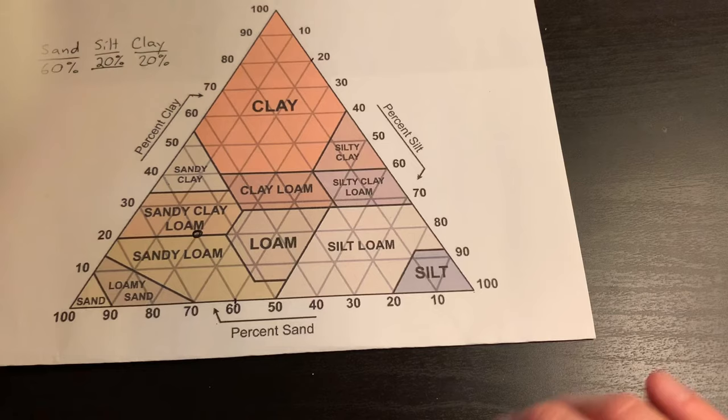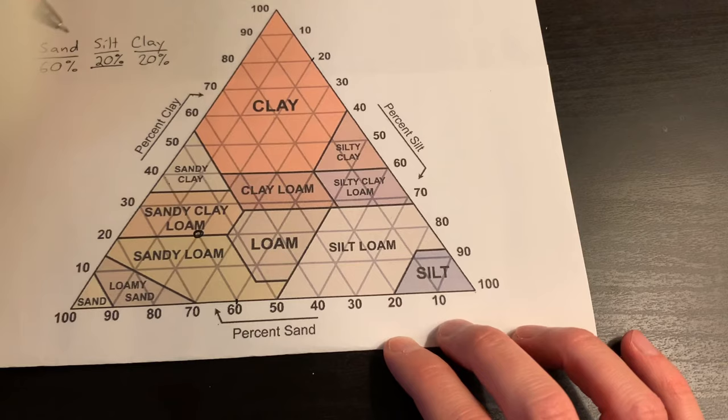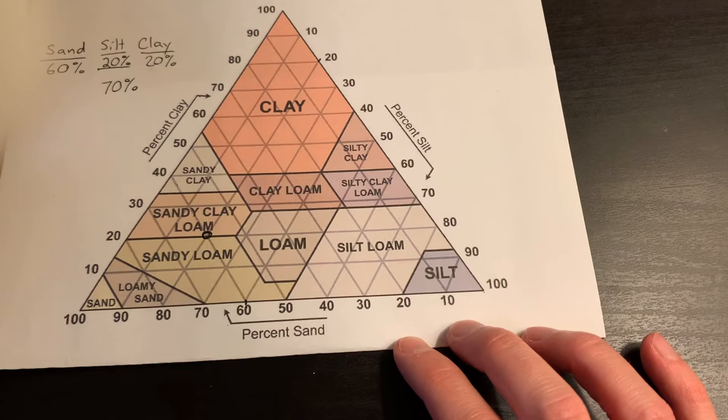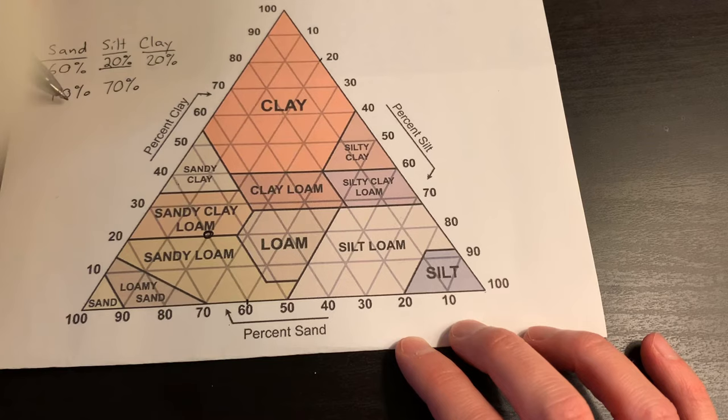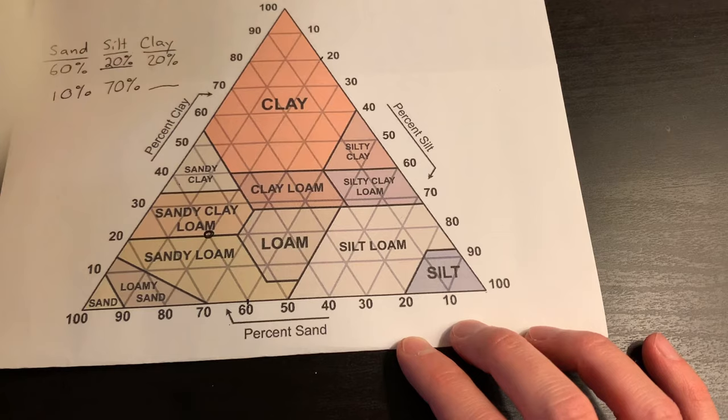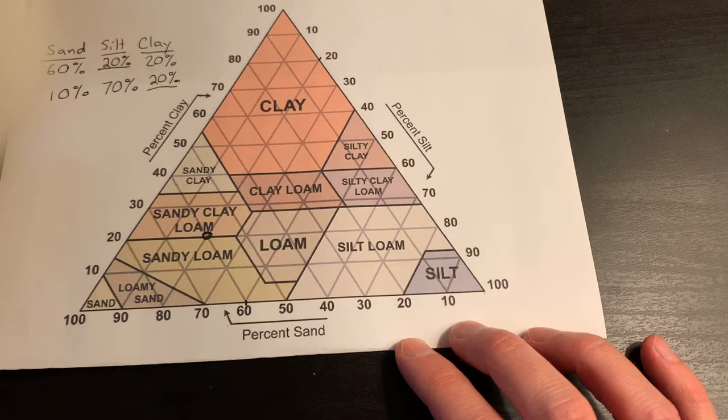Let's do one more just to practice. So let's say that we have 70 percent silt and that we have 10 percent sand. So if we have 10 percent sand, 70 percent silt, how much clay should we have? Again, 20 percent.